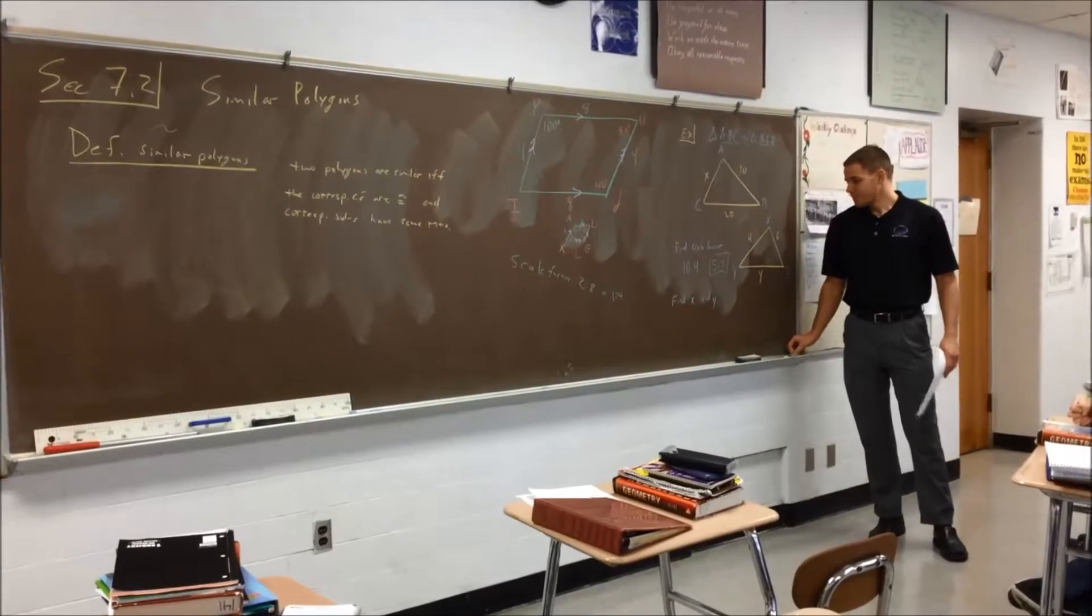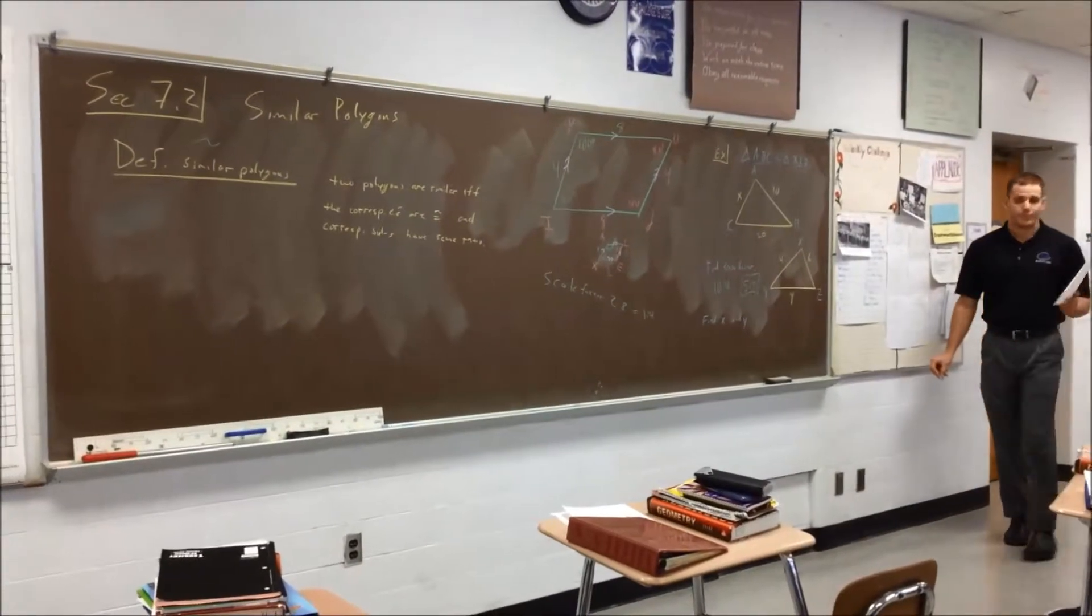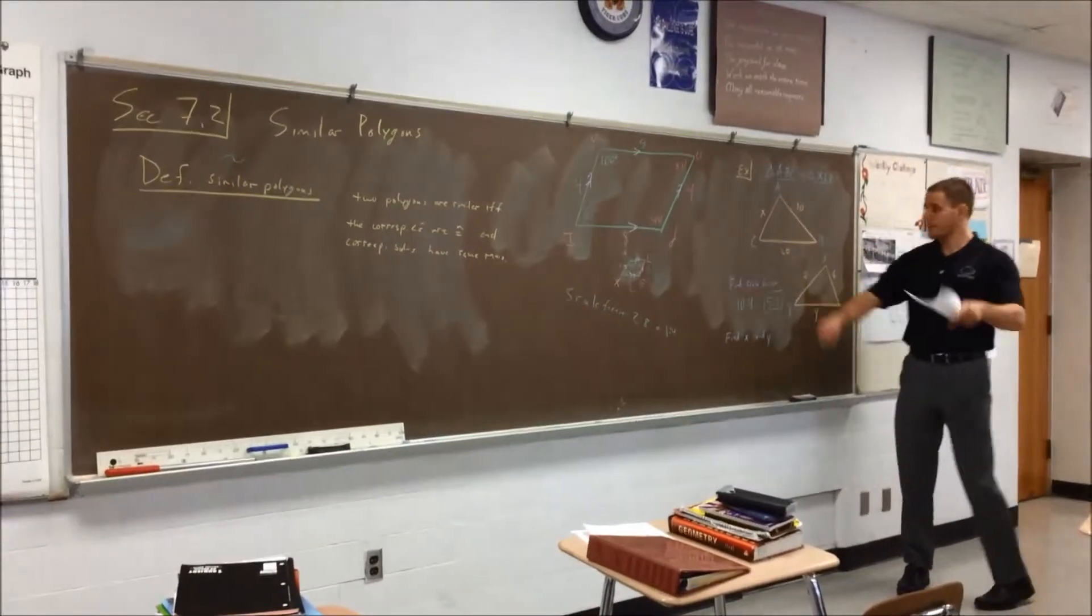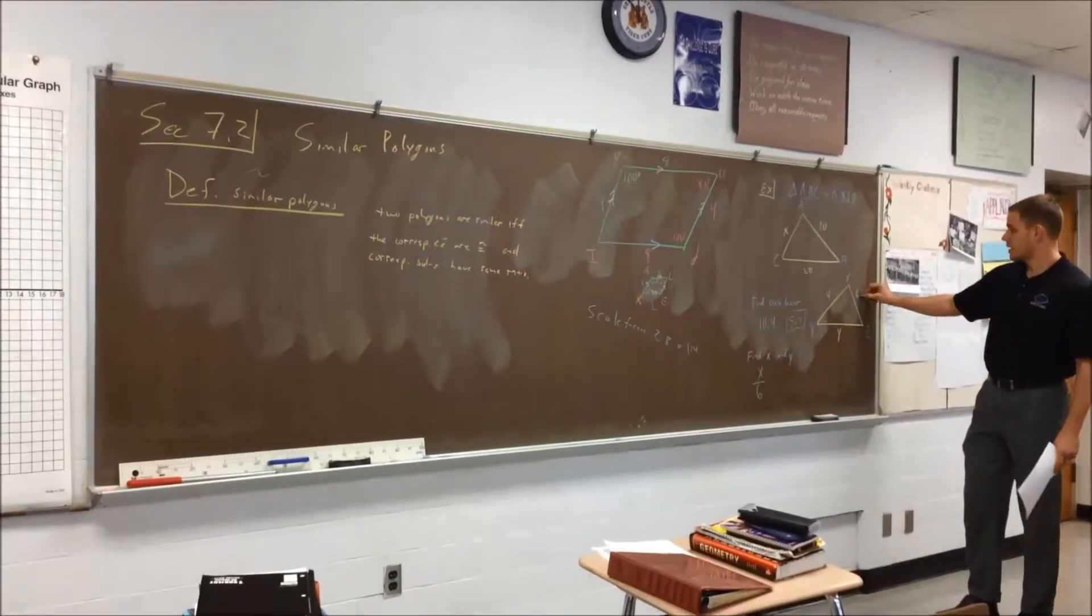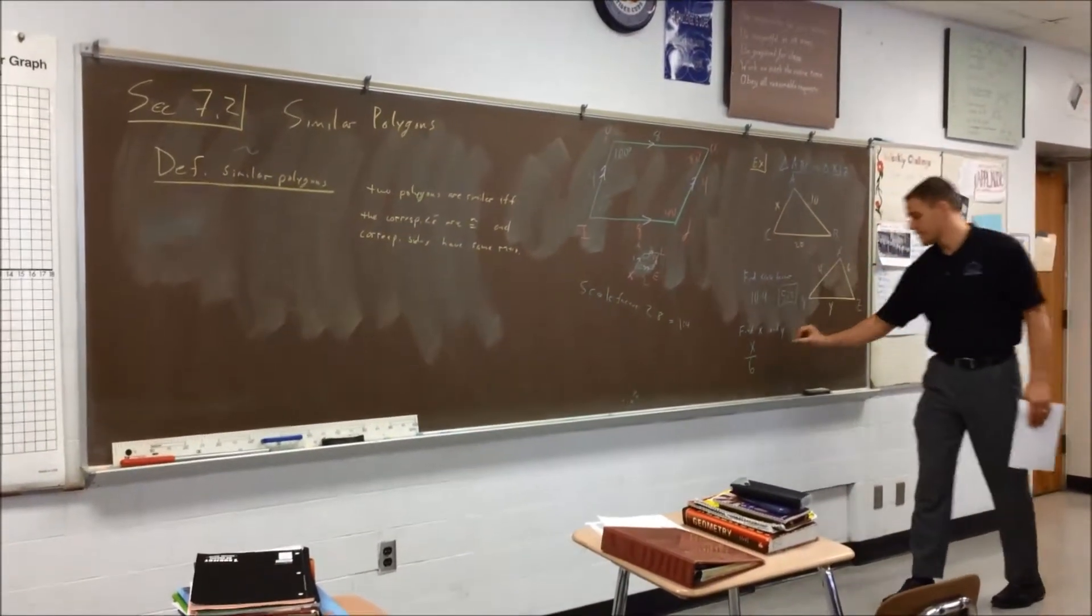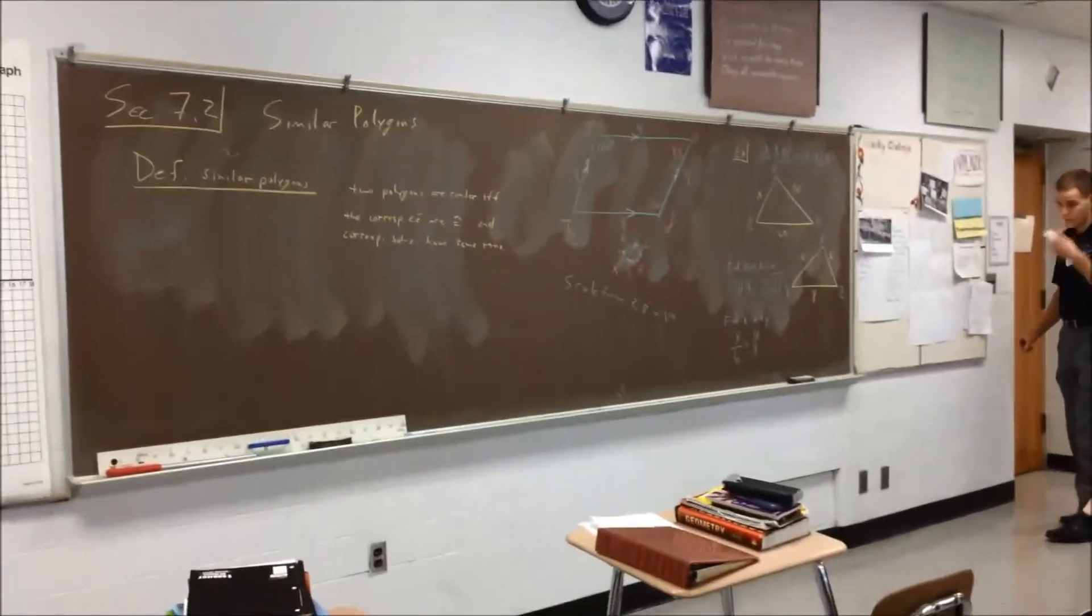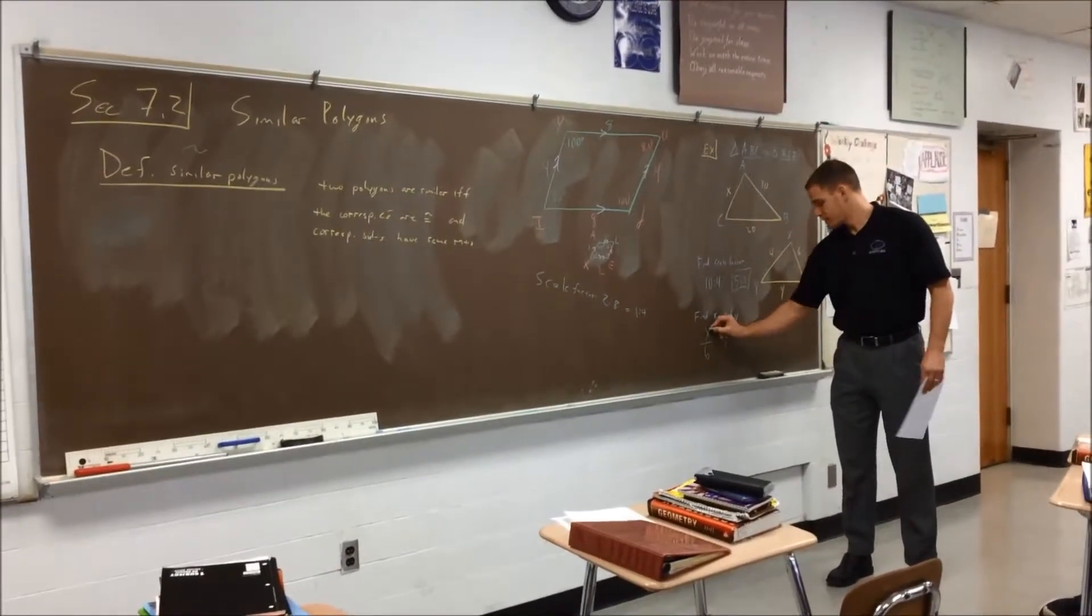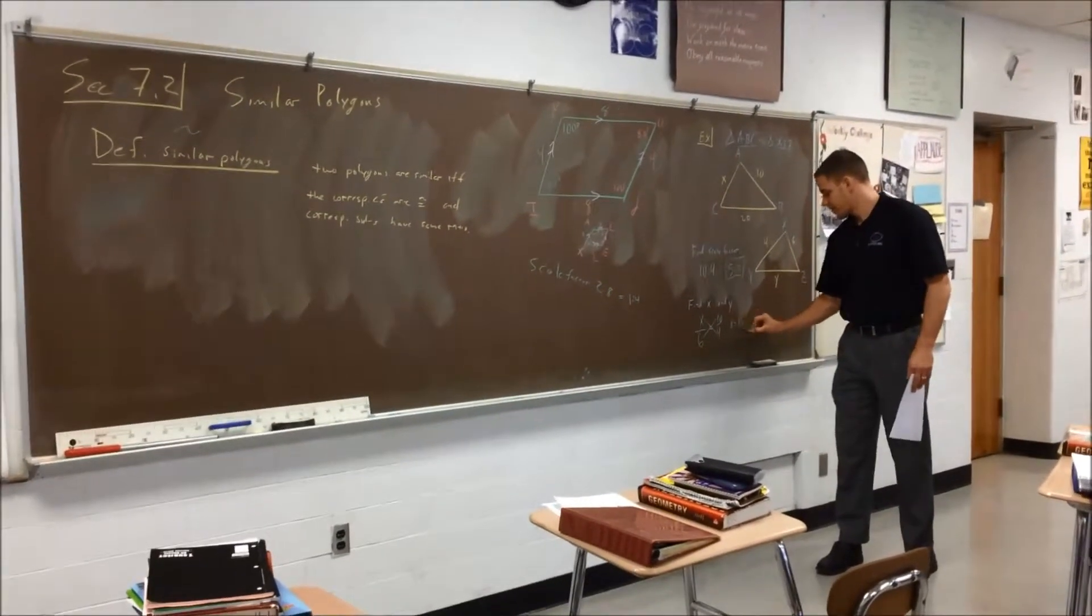To find x, who can tell me the proportion we would have to set up? Raise your hand please. x over 6 equals 10 over 4. Find two other sides that match up. You can have 5 over 2, that would work as well. From there we would just cross multiply. So 4x equals 60, x is going to equal 15.